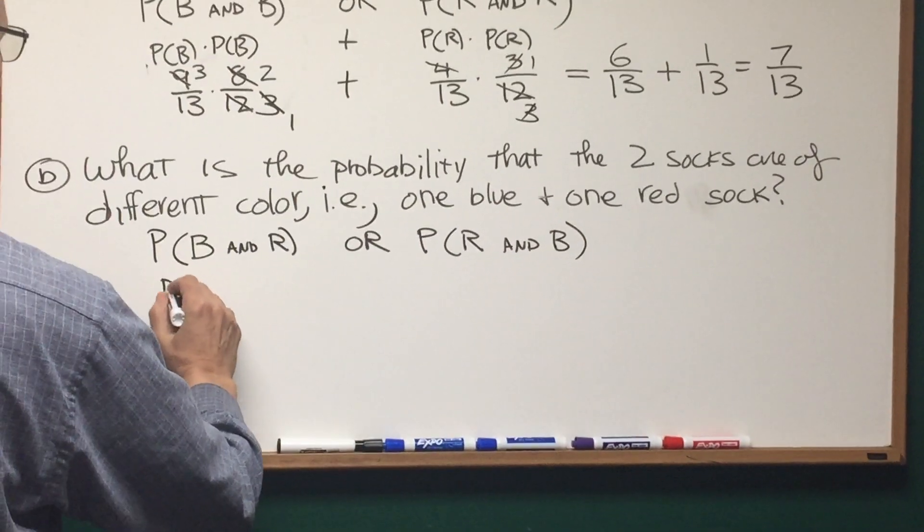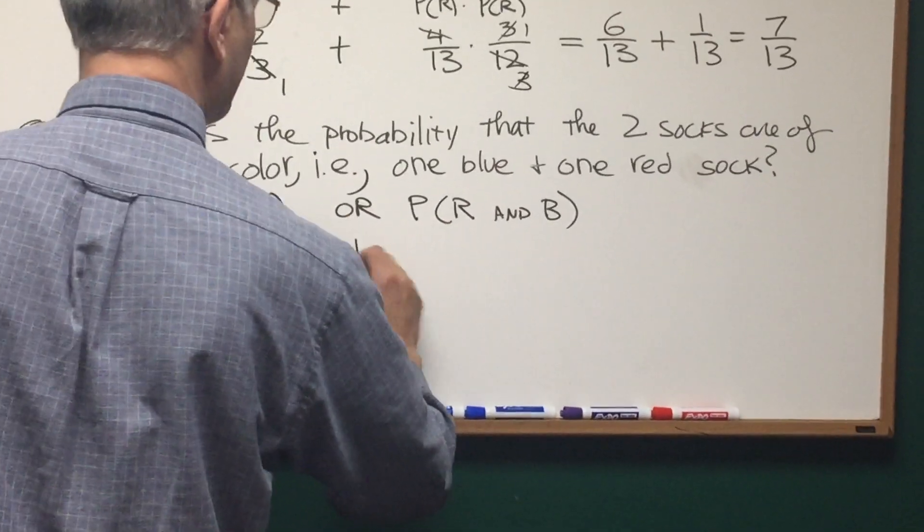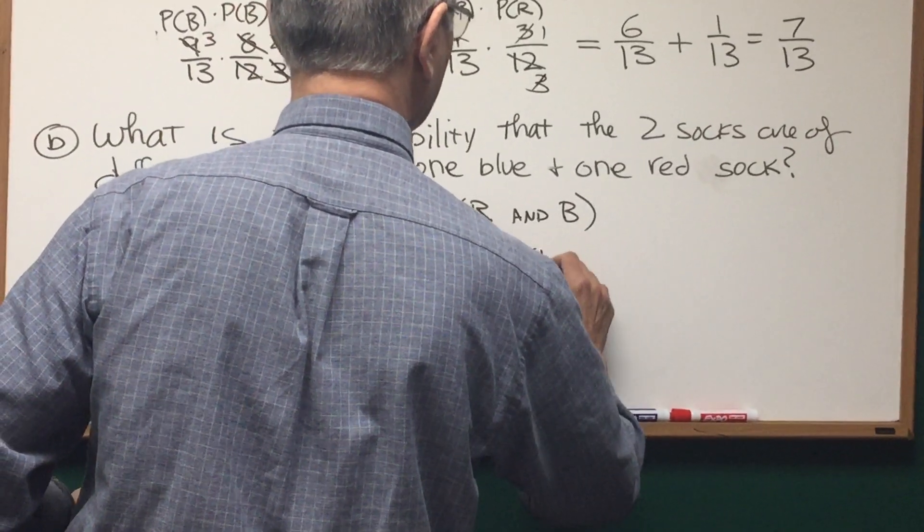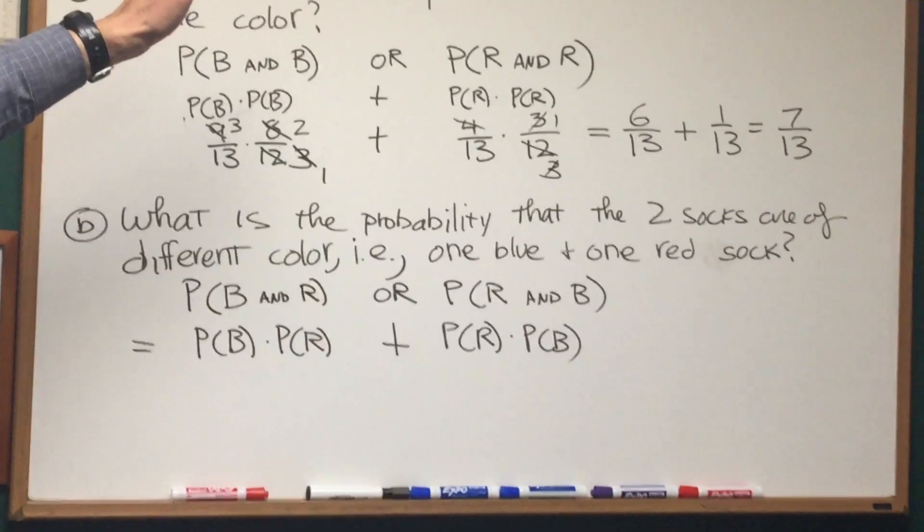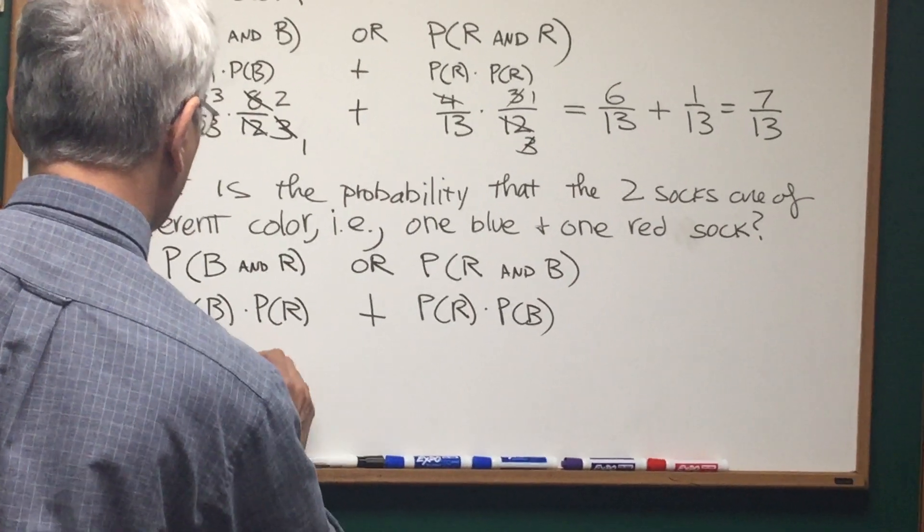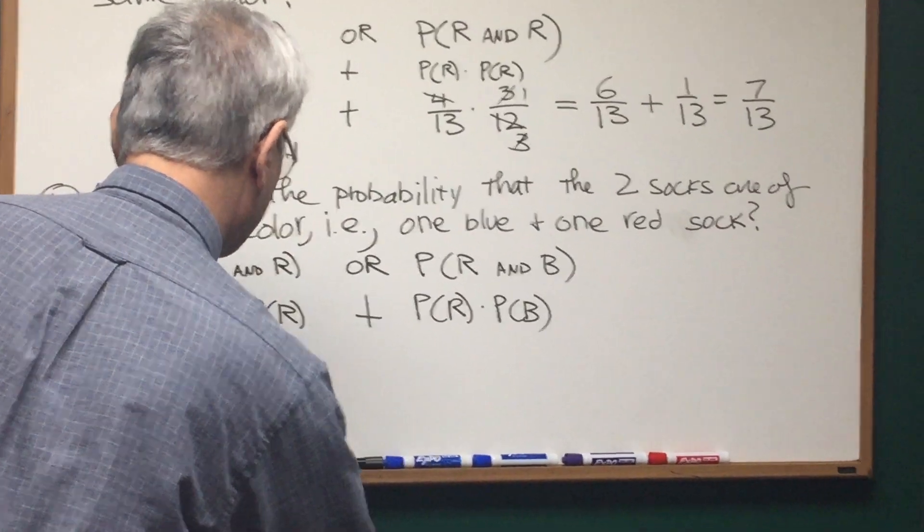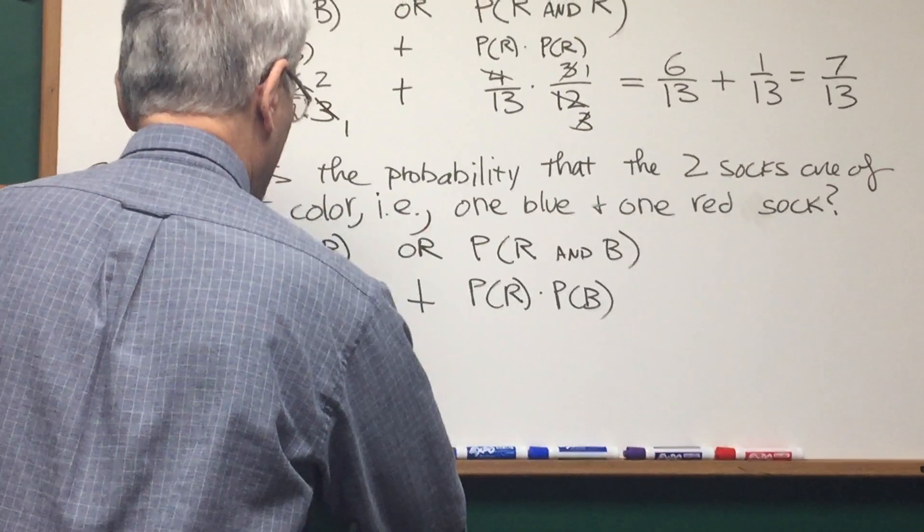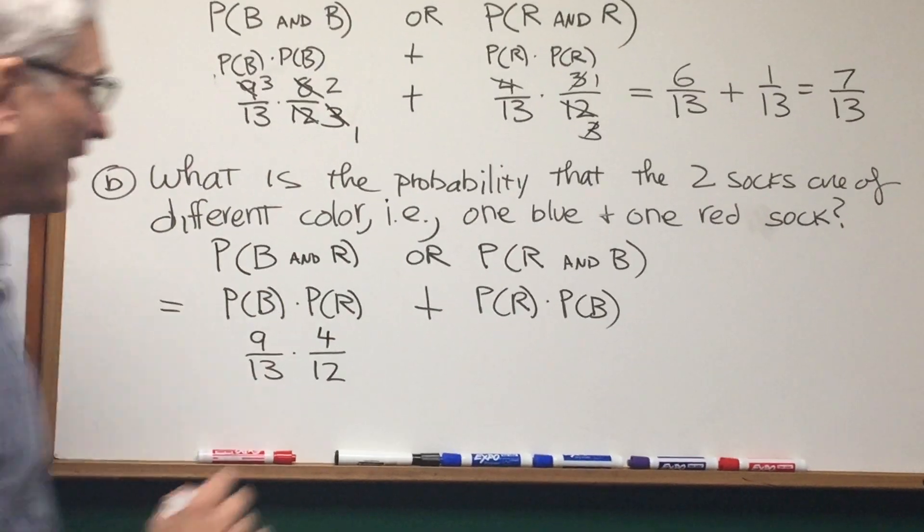Okay, so this is going to be probability of blue times the probability of red plus the probability of red times the probability of blue. Now we go back to the numbers, let's see, the probability of blue, that's going to be 9 out of 13. Okay, once that one sock is chosen, there are only 12 socks remaining in the drawer, but there are 4 red socks, so that's going to be 4. The probability of choosing a red sock after you've chosen that blue is 4 out of 12.